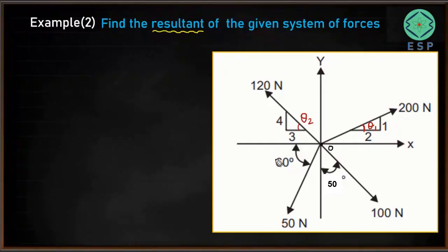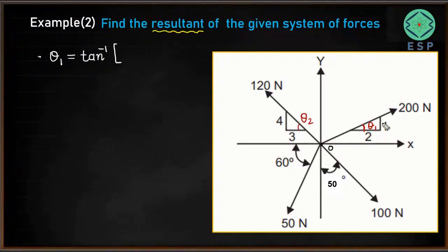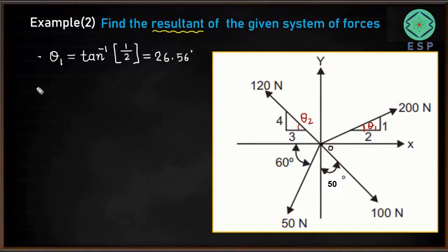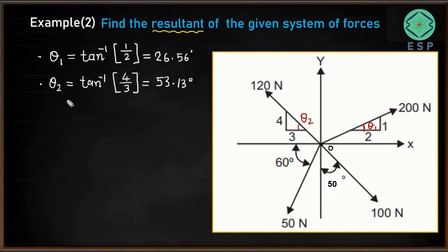The calculation is straightforward. We have a triangle where one side is 1 and the other is 2, so theta 1 equals arctan(1/2), which gives 26.56 degrees. Similarly, theta 2 equals arctan(4/3), which gives 53.13 degrees. So theta 1 is 26.56 degrees and theta 2 is 53.13 degrees.